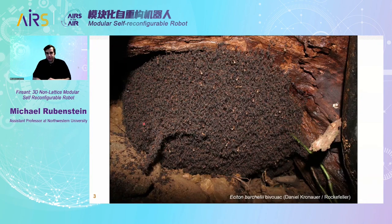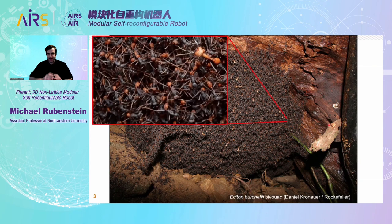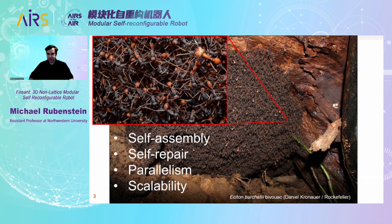I want to briefly describe why I think modular robots are interesting, with an example of collective behavior found in nature. This is a picture of an army ant nest called the bivouac. What you see is like a normal ant nest with tunnels and chambers, but this is made only out of the interconnected bodies of over hundreds of thousands of ants. It's very interesting that ants can work together to form these structures just by connecting to each other. This structure is self-assembled, can be repaired if damaged, can adjust shape, can form small bivouacs in parallel, and is also scalable — if you added or removed ants, it would adjust the size of the bivouac automatically.